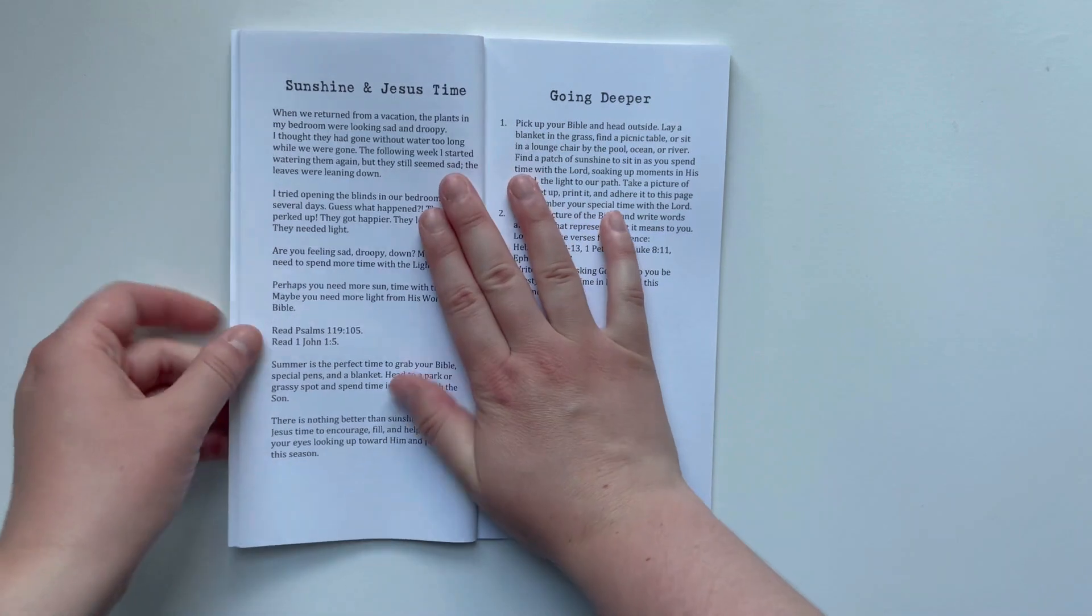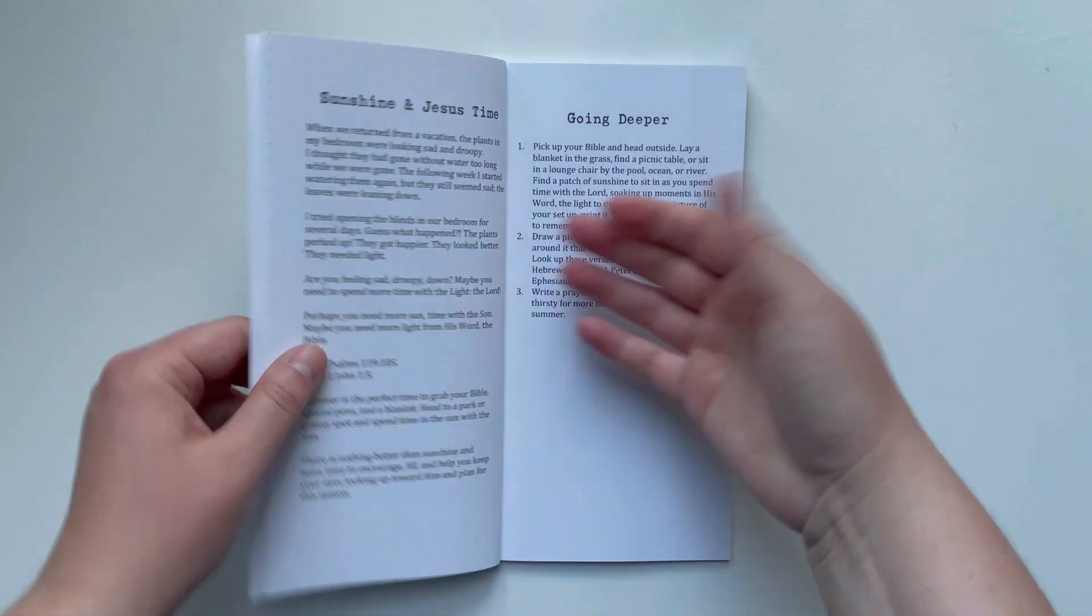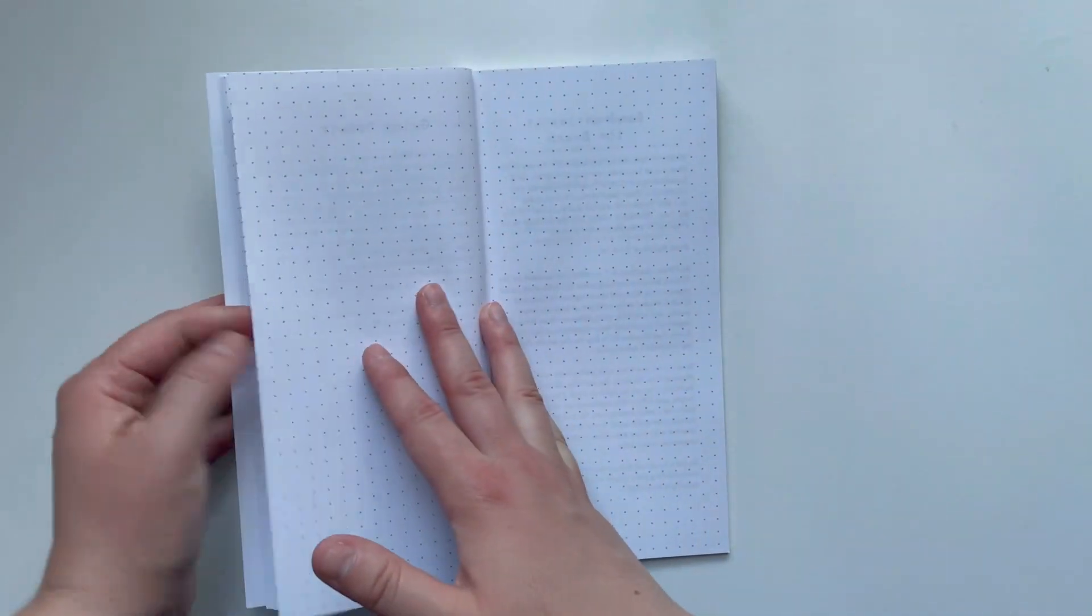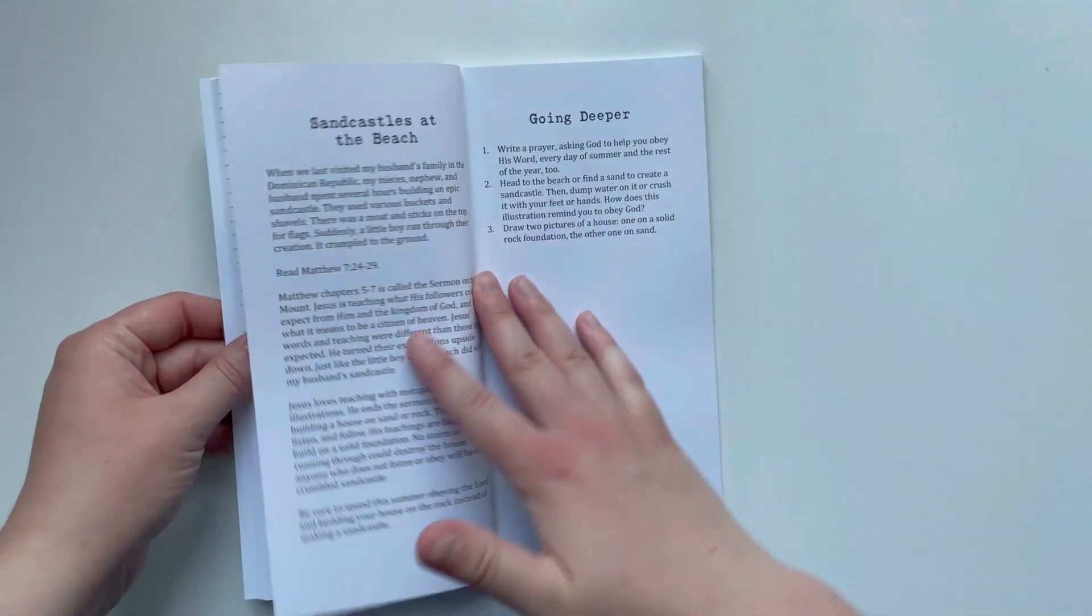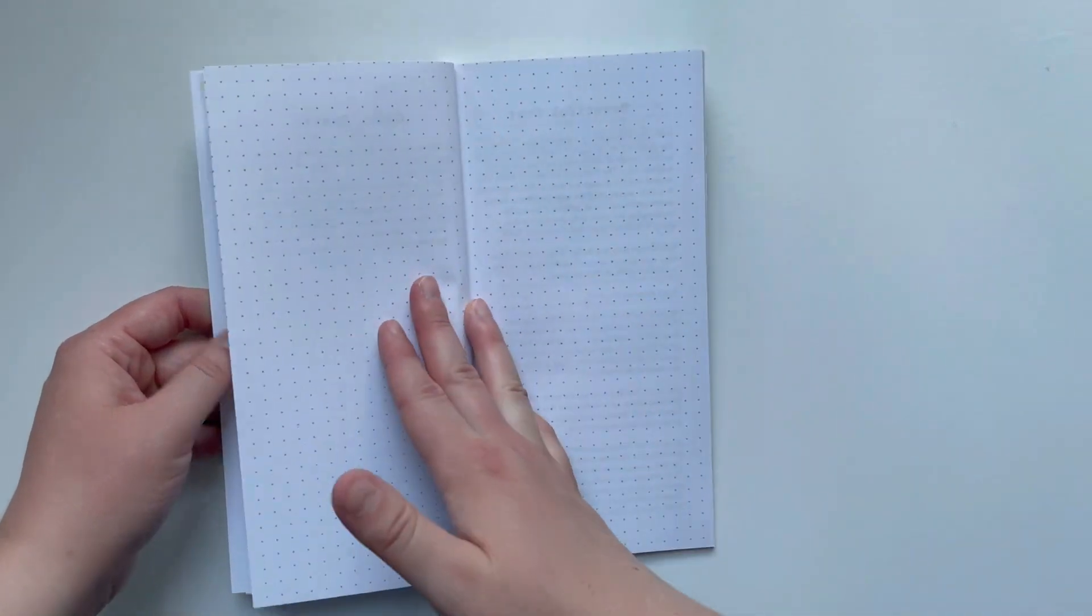The next devotion is Sunshine and Jesus Time, based off of our title. It's all about God's word, the power of God's word. We have Sandcastles at the Beach, the importance of obeying the Lord and His word.